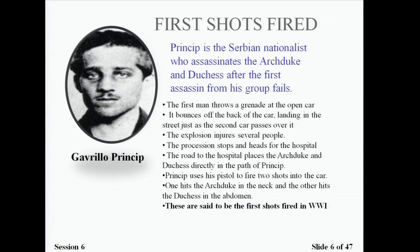Princip was about 19 years old at the time. He had just been turned down for the army — he wanted to enlist but was considered too scrawny and sickly. He was a very angry young man who felt his cause was worth fighting for and was rather radical. He basically wanted to fight to make sure that his people were represented equally. At the time there was a lot of unrest and racism against the Serbian population.